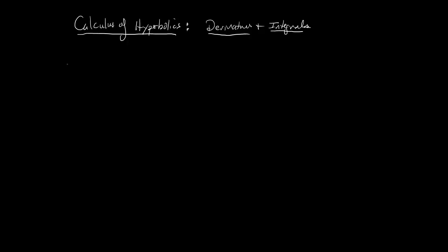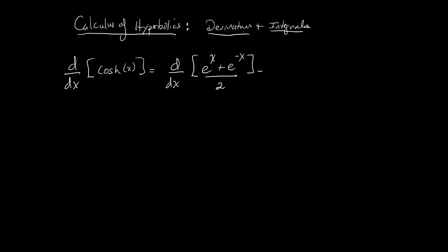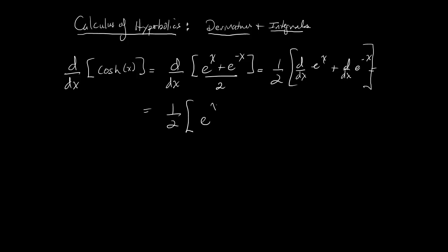Let's calculate the derivative of cosh(x). We use its definition: (e^x + e^(-x)) / 2. Pulling the constant 1/2 out front, we differentiate term by term. The derivative of e^x is e^x, and the derivative of e^(-x) is -e^(-x), giving us (1/2)(e^x - e^(-x)), which equals hyperbolic sine — sinh(x). Easy derivatives, pretty rapid and simple.